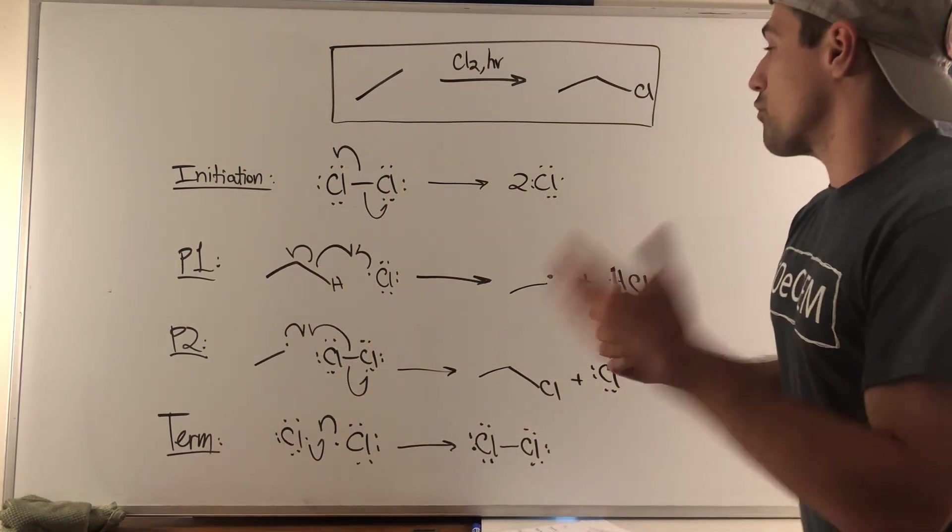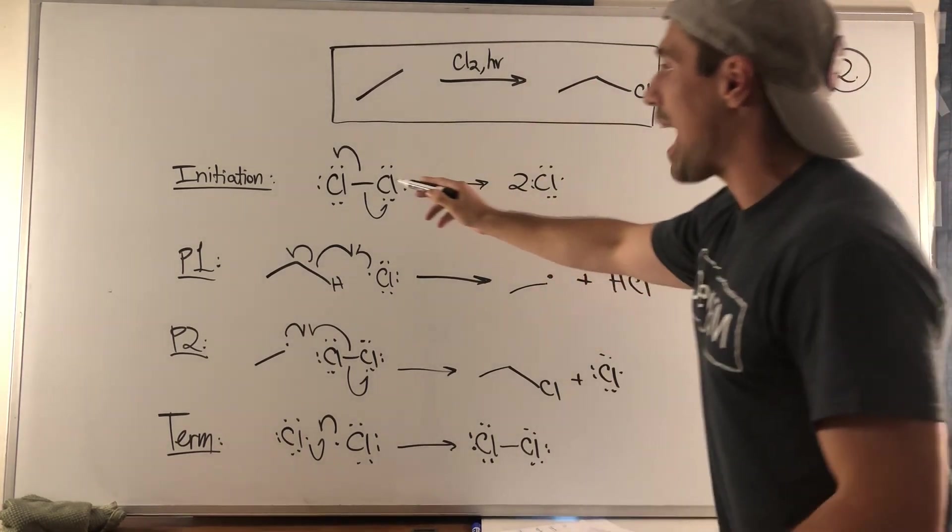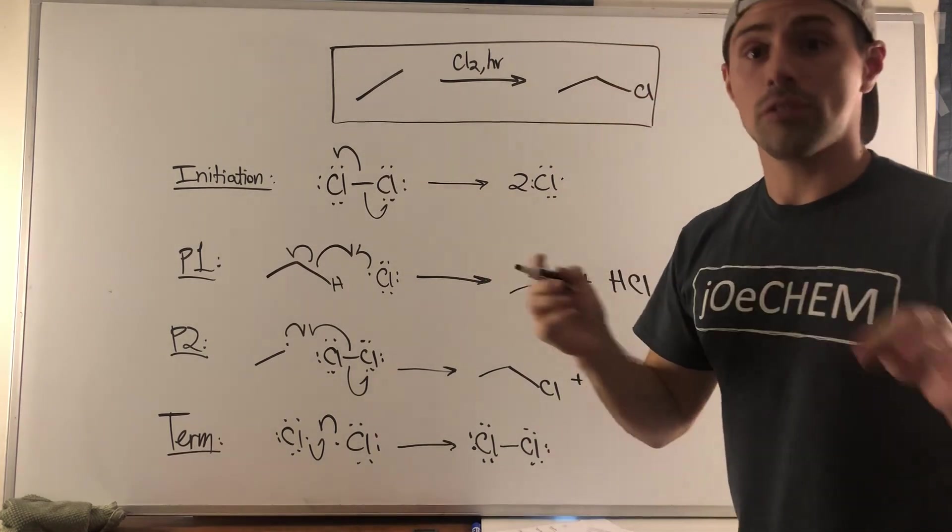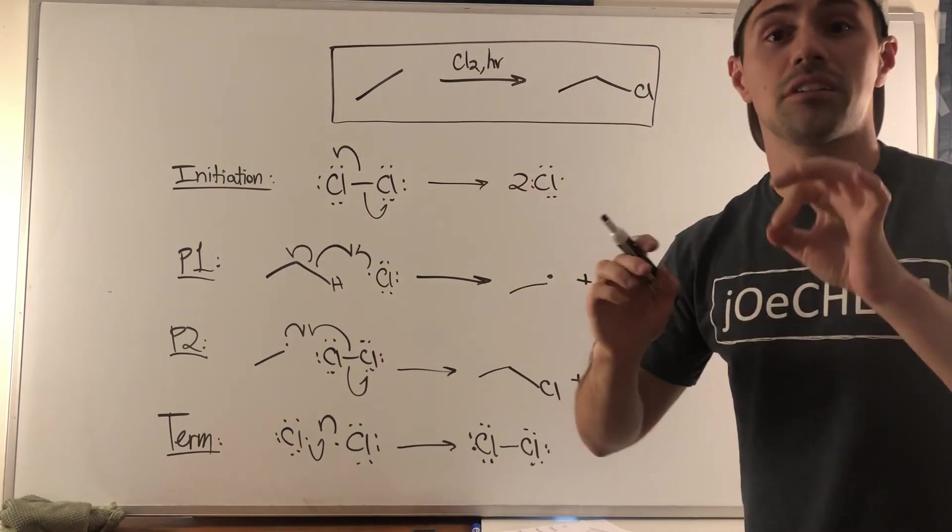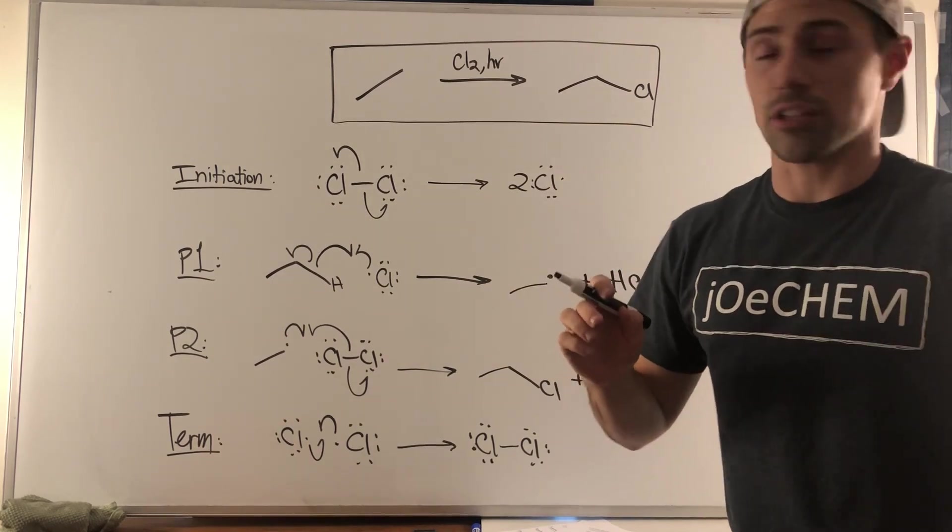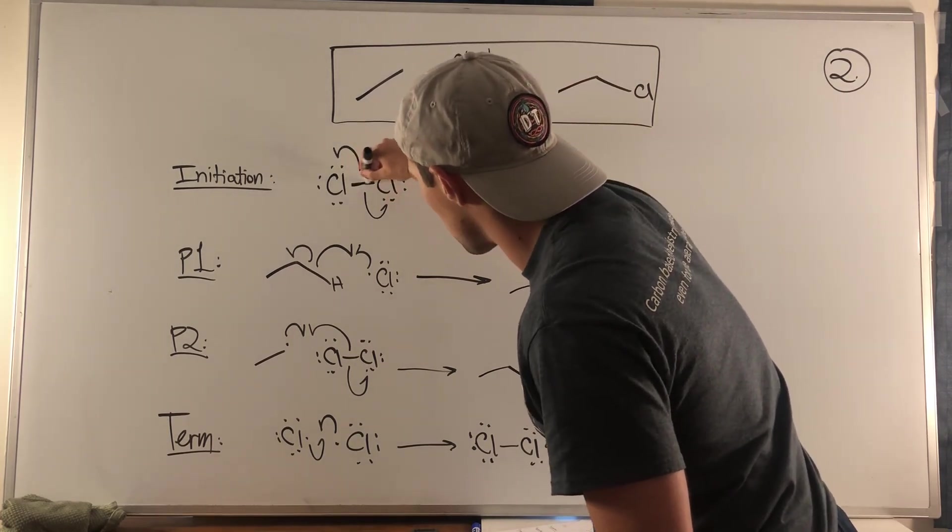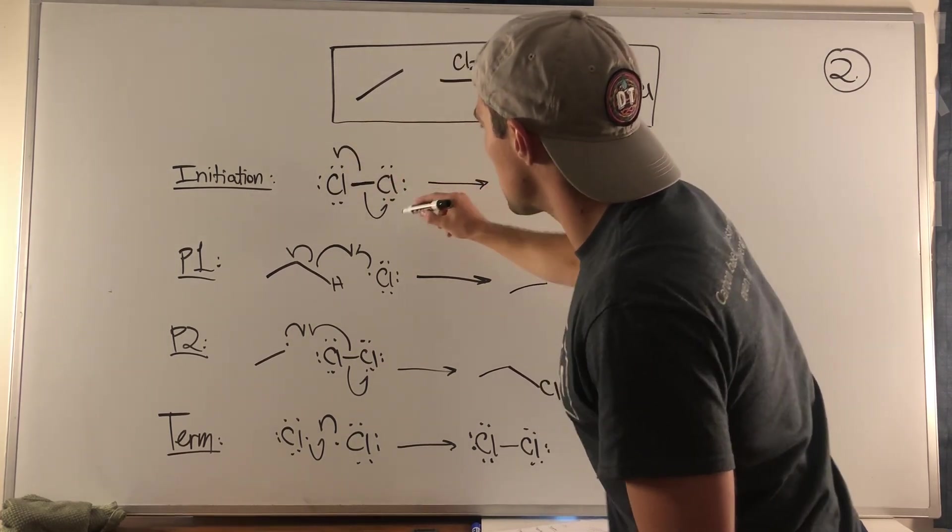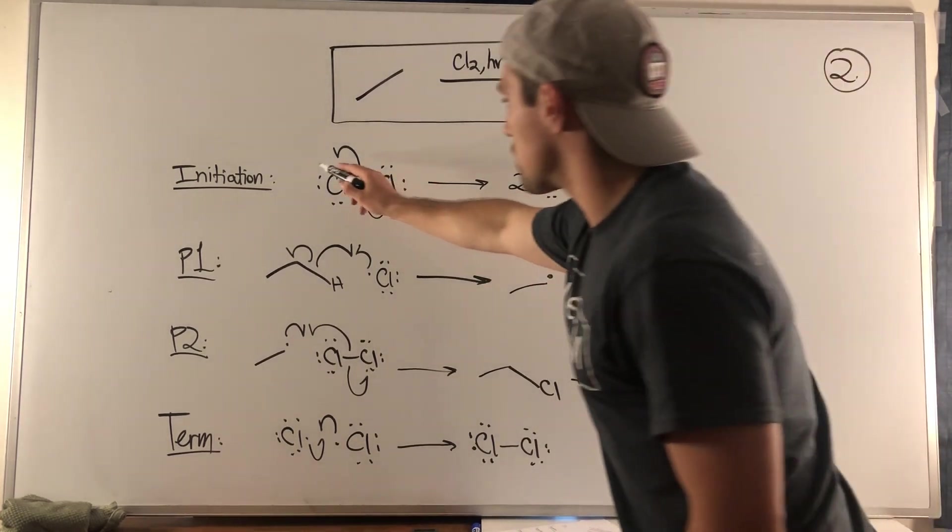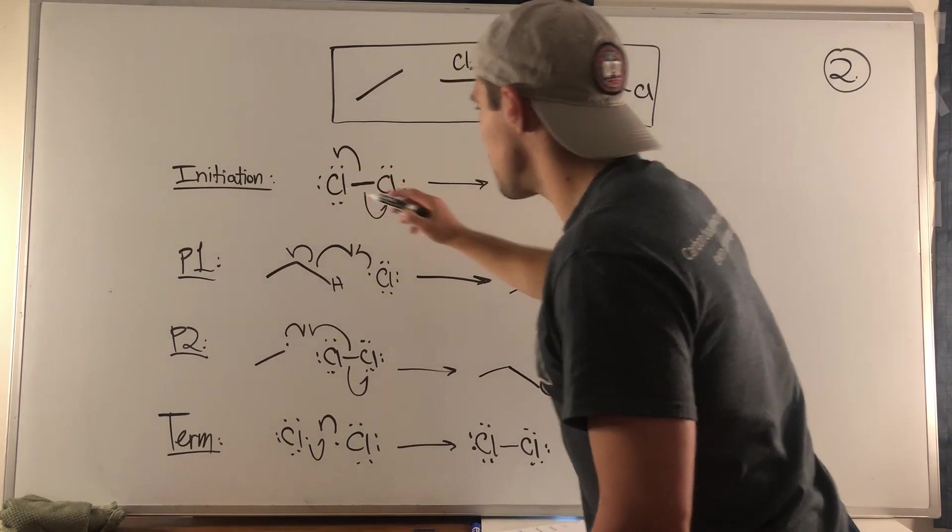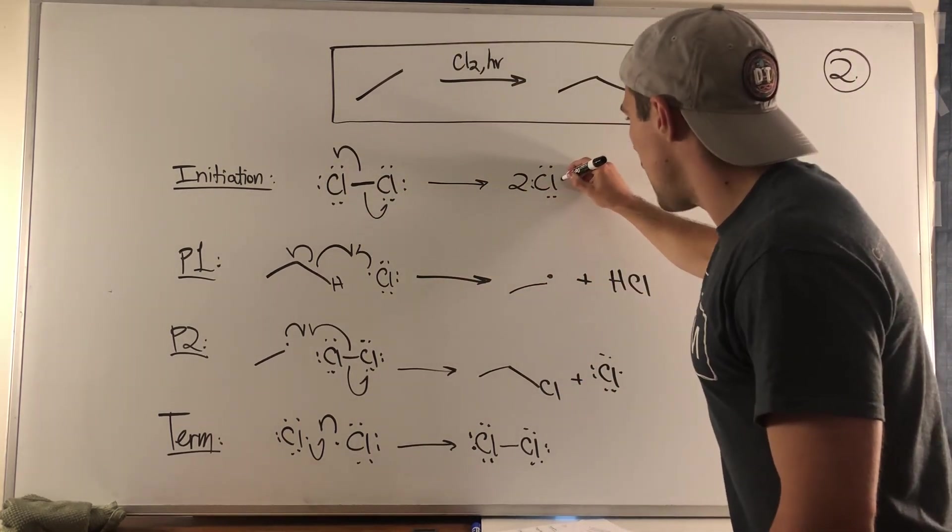But for free radical chlorination, bromination, in this case, we just need light. Light is enough to actually cleave this bond homolytically, meaning that each, the bond splits equally in the same way, not heterolytically where one atom gets both electrons. So we use single headed arrows to show that one electron in this bond that has two electrons goes to this chlorine and one goes to that chlorine. Single headed arrows. So we get two chlorine radicals, right? Because we have six electrons in these lone pairs. So once each atom gets one, we have an unpaired electron, a.k.a. a radical.